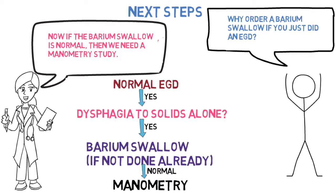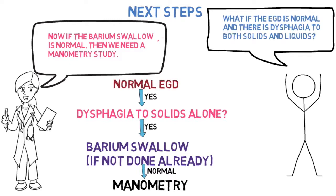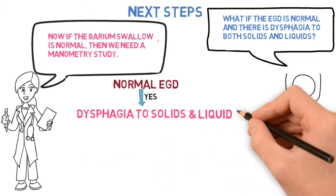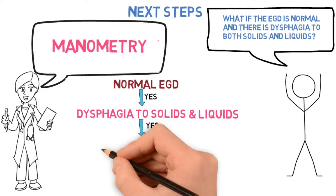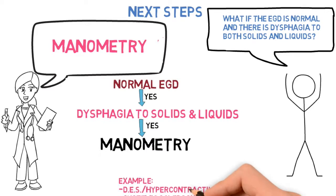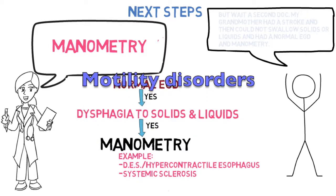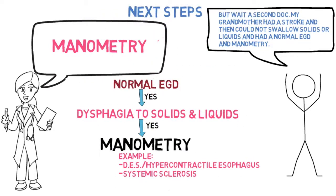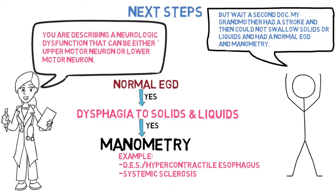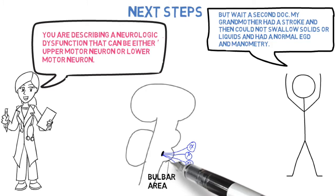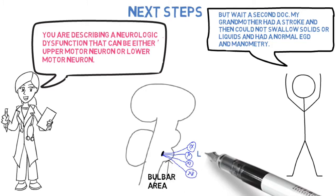If the EGD is normal and there is dysphagia to both solids and liquids, proceed directly to manometry. We're looking for DES, hypercontractile esophagus, or systemic sclerosis. A patient with a stroke who cannot swallow solids or liquids, with a normal EGD and manometry, is describing a neurologic dysfunction that can be either upper motor neuron or lower motor neuron.